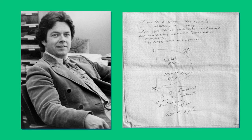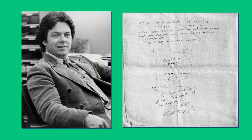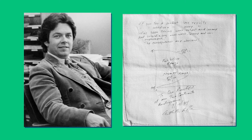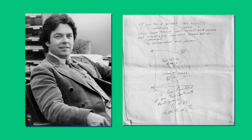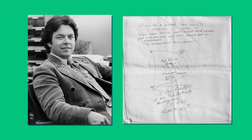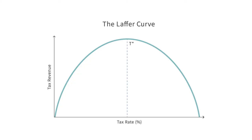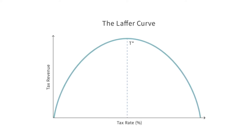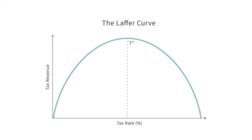In the 1980s, economist Art Laffer, then at USC and now a professional economic consultant, drew a picture on a napkin — a picture that changed the world. As the legend goes, Laffer drew a simple graph with a horizontal axis labeled tax rate and a vertical axis labeled tax revenue. On the graph, he drew a simple upside-down U.